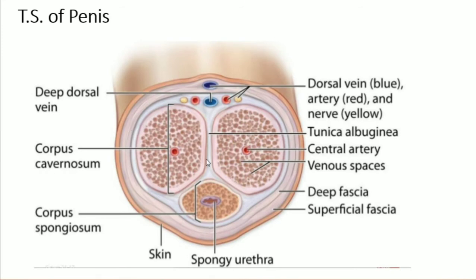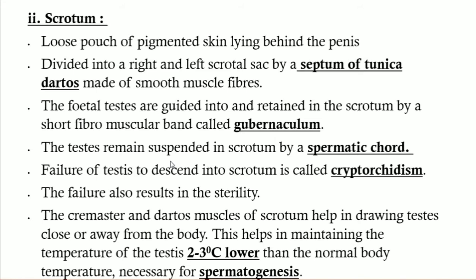The second structure is the scrotum. The scrotum is a loose pouch of pigmented skin lying behind the penis. The scrotum is a covering around the testes. It is divided into left and right scrotal sacs, so the pair of testes is covered in two layers — left and right.